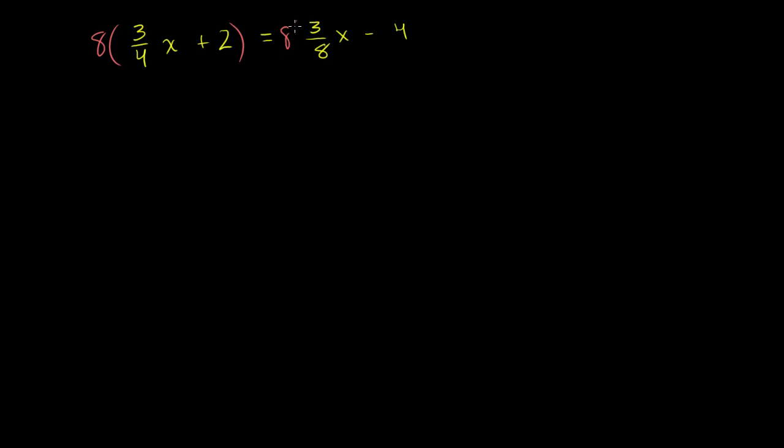I'm going to multiply 8 times both sides of this equation. And you say, hey Sal, how did you get 8? And I got 8 because I said, well, what's the least common multiple of 4 and 8? Well, the smallest number that is divisible by both 4 and 8 is 8. So when you multiply by 8, it's going to get rid of the fractions. And let's see what happens.